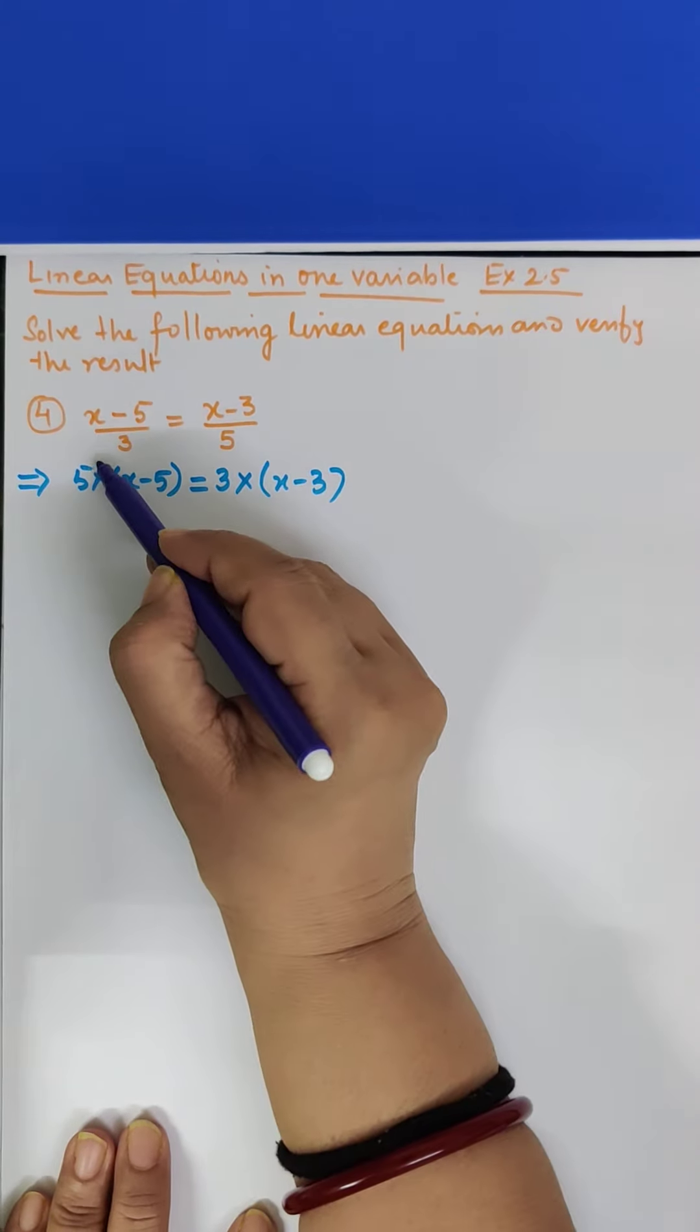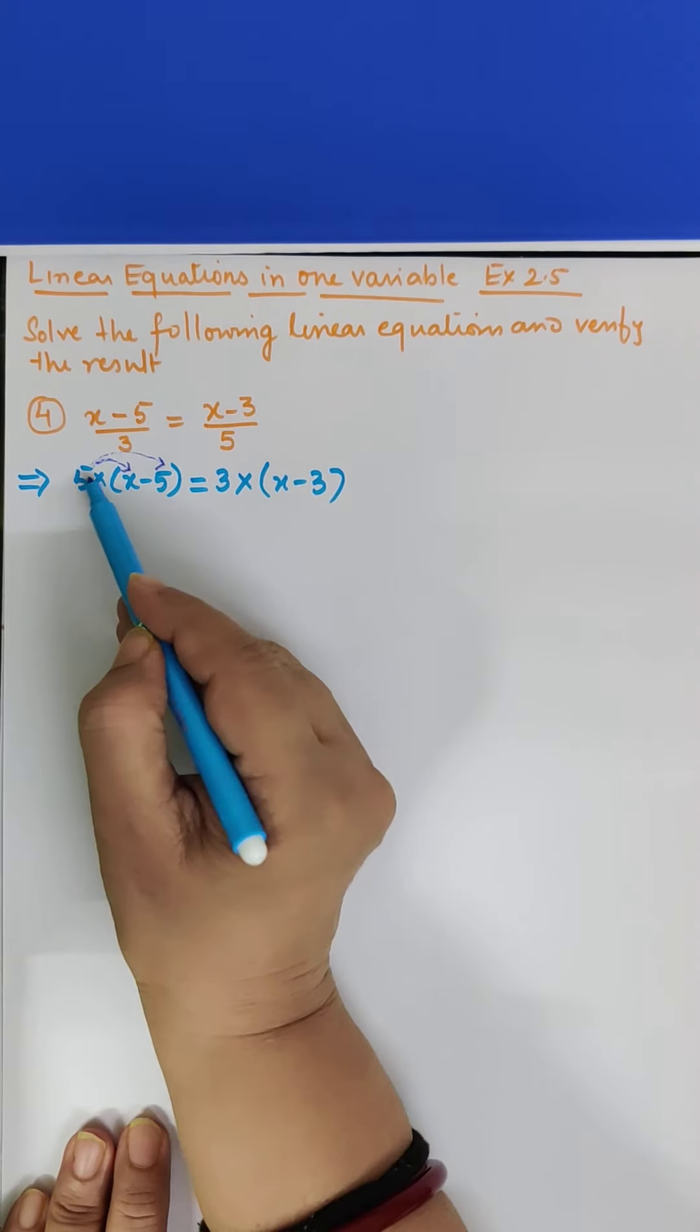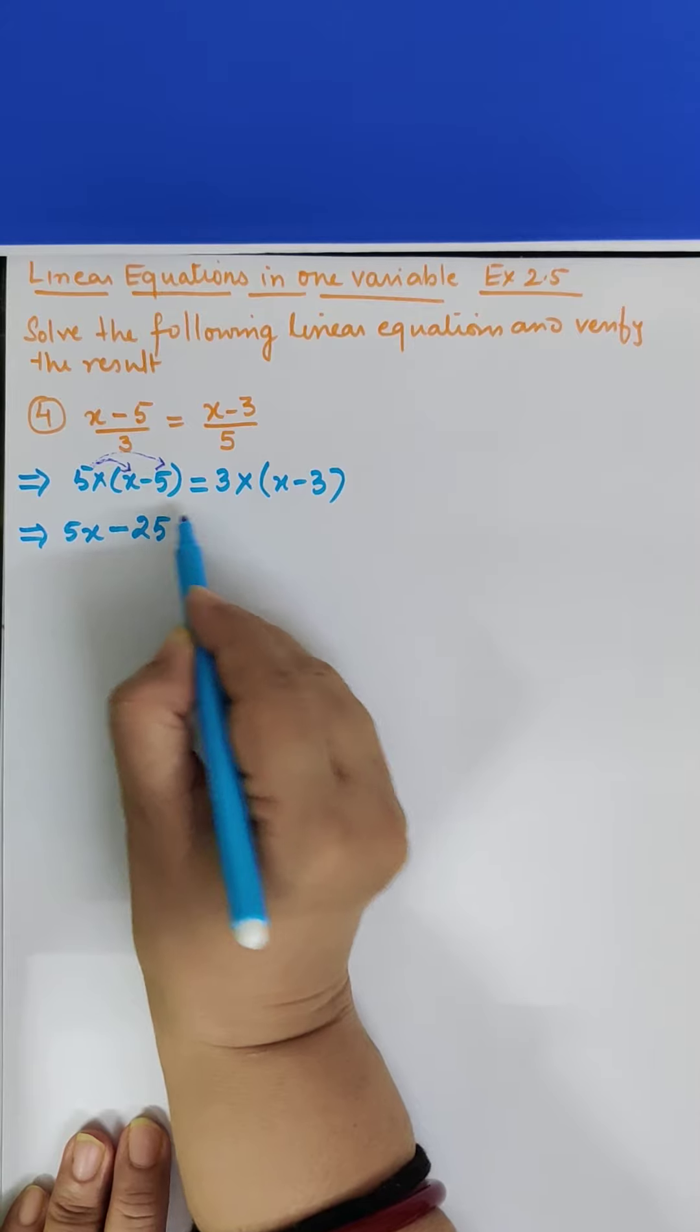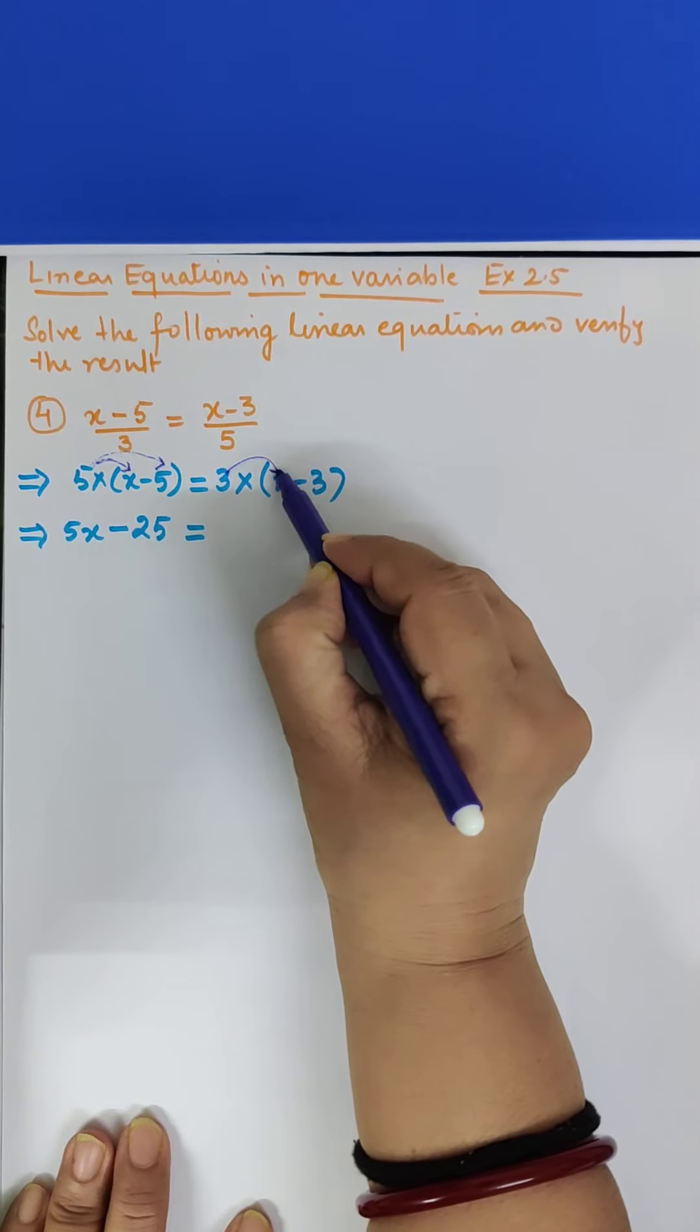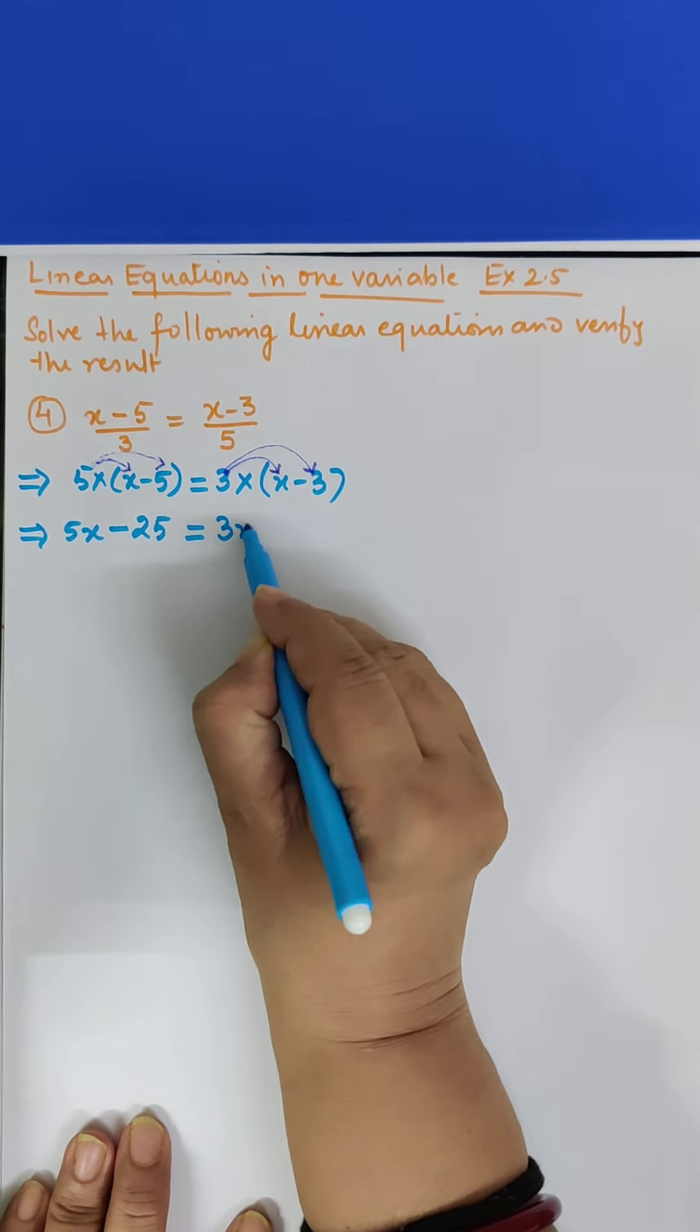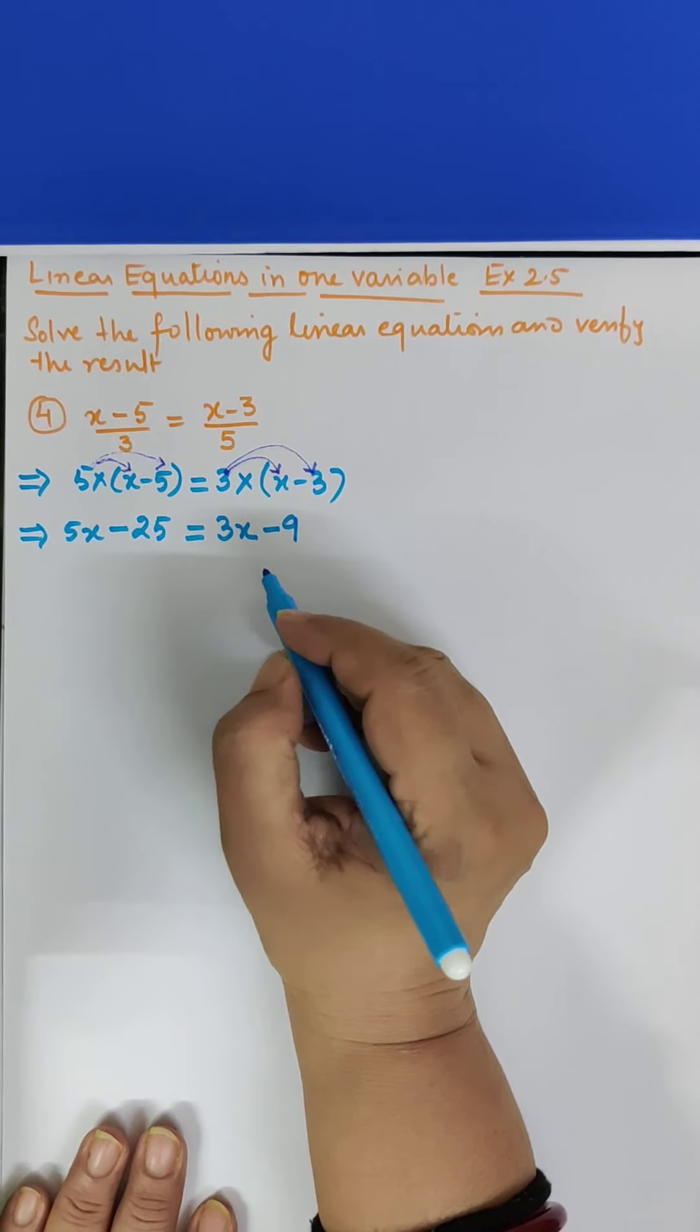Now this 5 is x-5. This is x-3 multiplied and this is x-3 multiplied. So this 5 into x is what? 5x minus 5 into 5 is 25. This is equal to. Now this 3 into x is 3x minus 3 into 3 is 9.